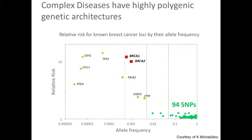Starting out, breast cancer, like any other complex disease, is going to be highly polygenic. Before the era of genome-wide association studies, through studies of highly affected families and linkage studies, researchers had identified rare variants which are highly penetrant. That means if you have the variant — which is rare in the general population — the risk is very high. Those have been identified, like the BRCA1 and BRCA2 genes, and there are a few other variants like that.